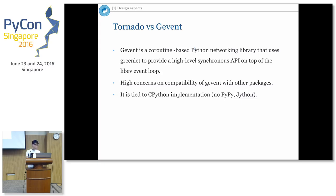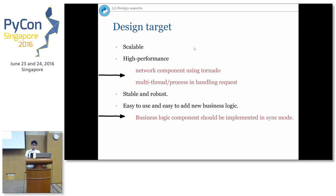Another option is Gevent, a very new library. It's a coroutine-based Python networking library that provides a high-level synchronous API on top of the event loop — basically abstracting away callbacks, helping you write synchronous code while still getting good scalability. However, we encountered quite a number of troubles with Gevent because not many libraries are compatible with it, and it's tied to the CPython implementation and doesn't support PyPy or Jython.